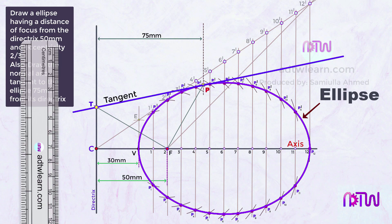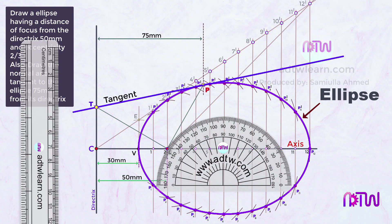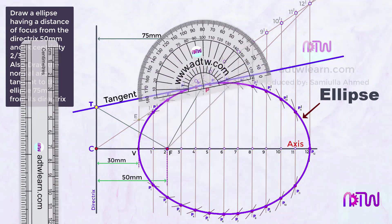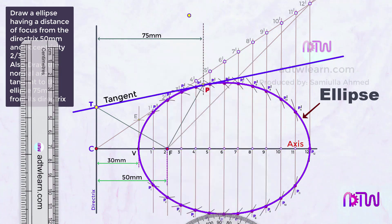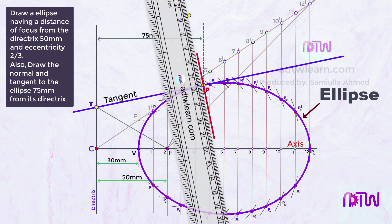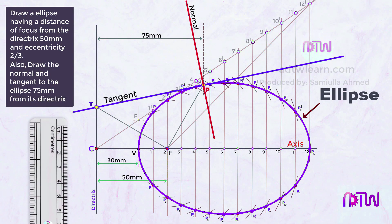To draw the normal, place the protractor on the tangent line, mark 90 degrees, and draw a line through P at that angle. This line is the normal to the ellipse. This completes the construction of the ellipse with its tangent and normal using the eccentricity method.